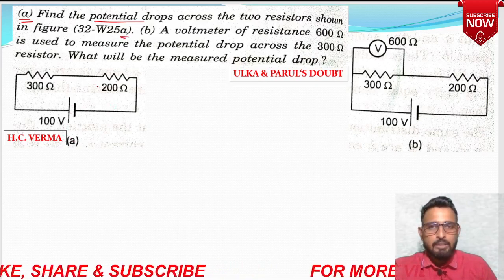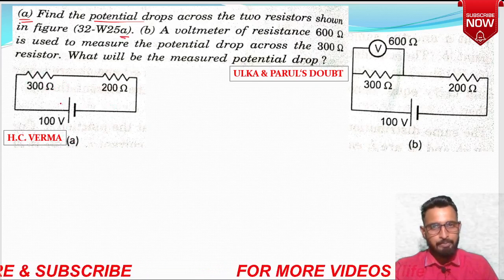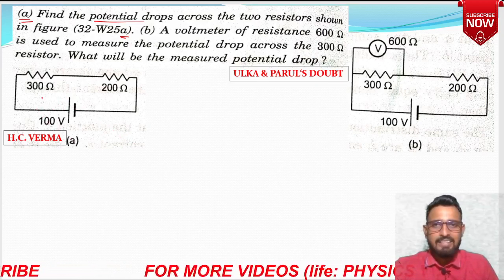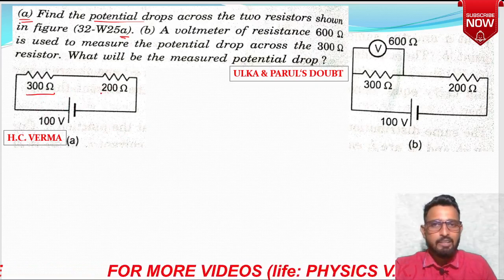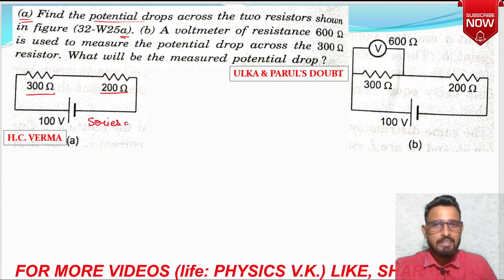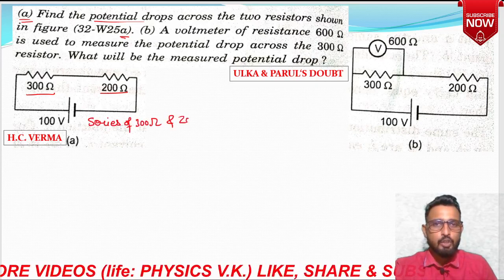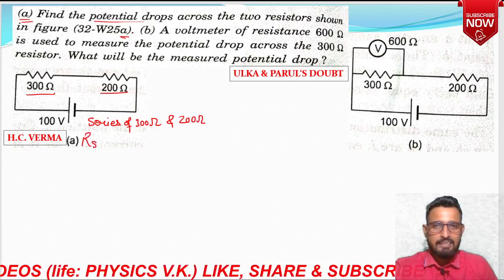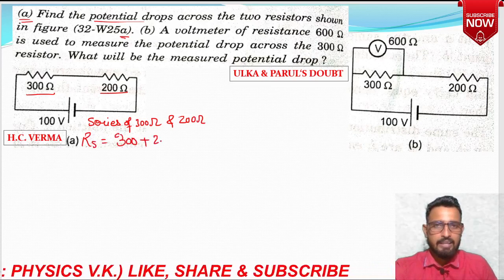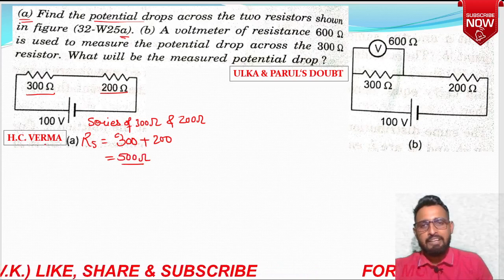So here is our diagram A — we need to find the potential difference across both resistors. This is simple 10th class material. So we have 300 and 200 ohm. How are they connected? In series. So for 300 ohm and 200 ohm in series, the net resistance would be 300 plus 200.